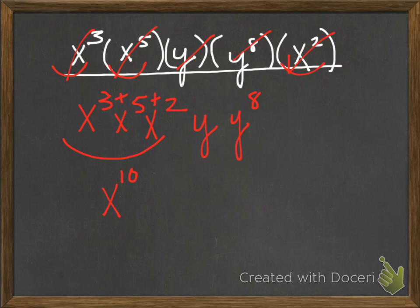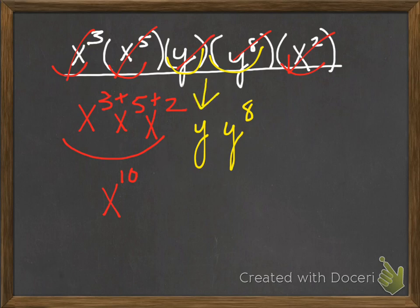Sometimes they'll say evaluate. Evaluate would be as if I told you x was equal to something. Say I told you x was equal to 2 and y is equal to 5. I'll just throw down two numbers. That direction would probably be simplify and then evaluate. Then you'd actually give me a number. But in this case, I didn't give you a value. So the only thing you can do is simplify.